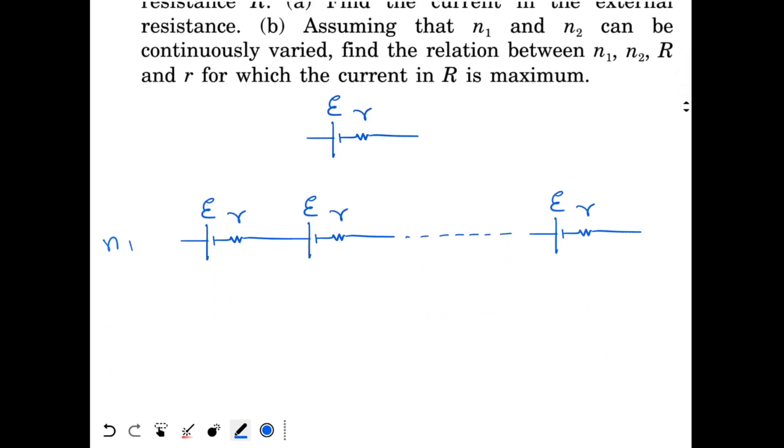So if I want to combine them into a single battery, that single battery should have EMF how much? The EMF of the single battery will be N1 times E and the resistance will be N1 times r. Because all the EMFs are in series, the EMF get added. All the resistors are in series, so the resistors get added.